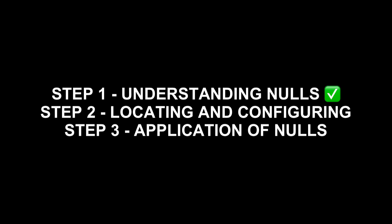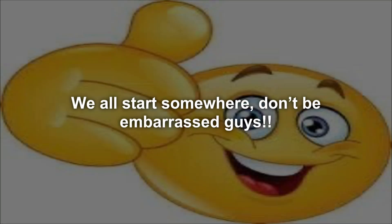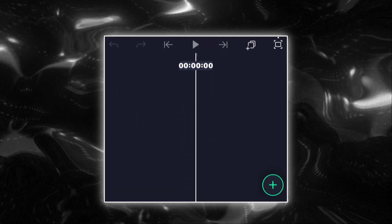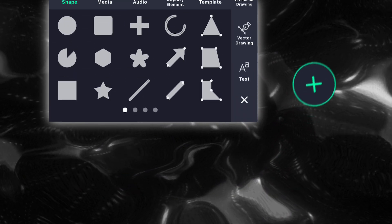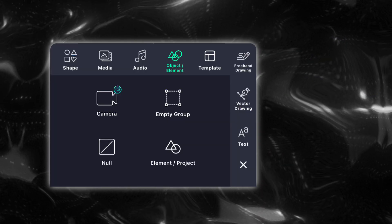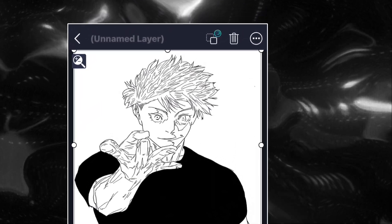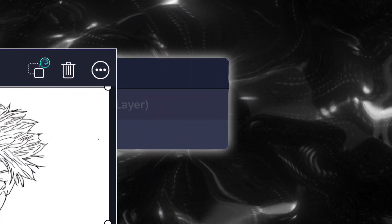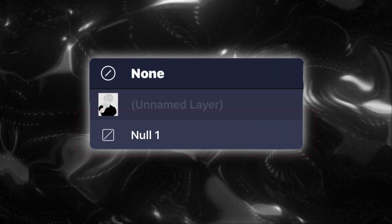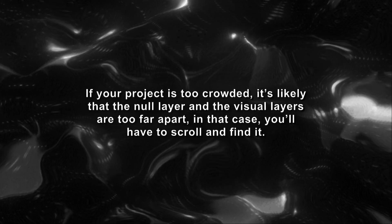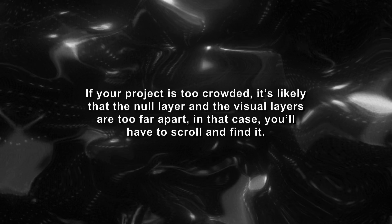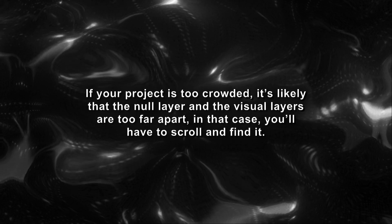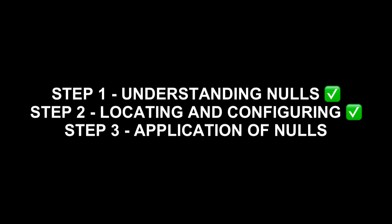Now that you know what a null is, I'm going to show you how to add a null layer and attach other layers to it. Inside a project, you're going to want to click on this plus icon and then the object elements tab. Just click on null and it'll add a null layer to your project. To attach a layer to the null, click on the layer, then on the top right click this. It'll open up a tab of all the layers in your project. Click on the null layer to attach it. If you don't see your null layer there, scroll down or up, because the null layer and the other layers can sometimes be too far apart.